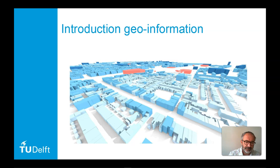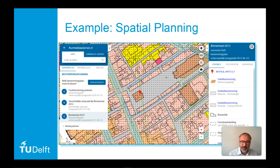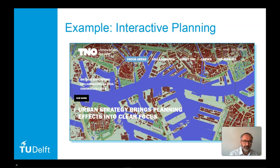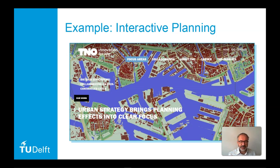For example, spatial planning itself becomes more and more digital. The formal spatial plans of the Netherlands are digital plans nowadays. You can use them in a map service or in a geographic information system to use and combine with other data in your research project. Interactive planning tools are combined with calculation models in order to develop better strategies and policies for the urban environment. Thus you can see the effects of your design changes on the fly — this would not be possible without underlying geospatial data and models.